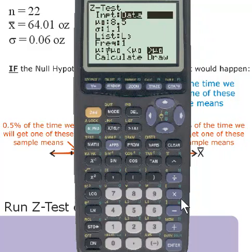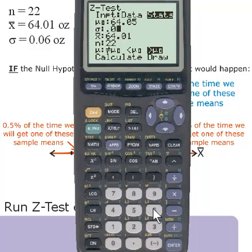Highlight stats and press ENTER. Press the down arrow key and enter in the hypothesized value for the population mean, 64.05. Then enter in the value for the population standard deviation, 0.06.